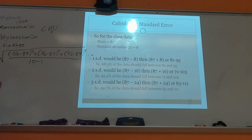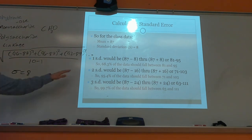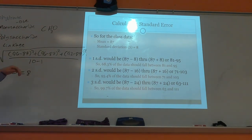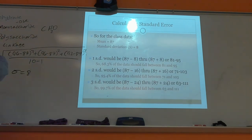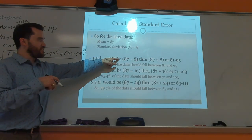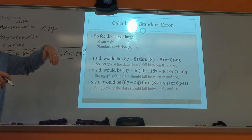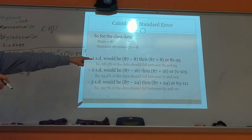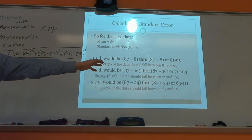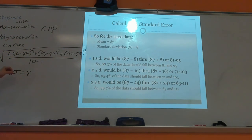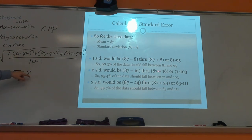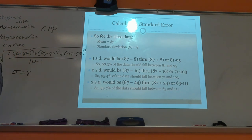So what does a standard deviation of 8 actually mean? If the test average was 87, one standard deviation means you subtract 8 and add 8 from the test score — so 68.3% of the data falls between 79 and 95. Two standard deviations means adding and subtracting 16, so 95% of test scores fall between 71 and 103.